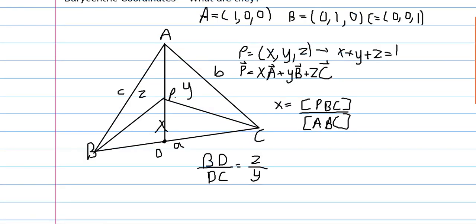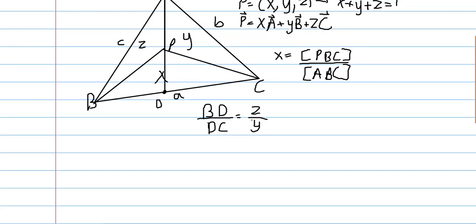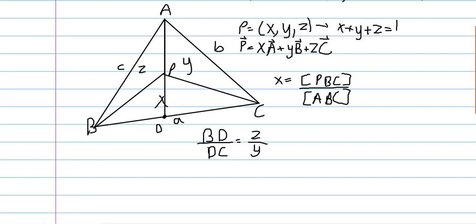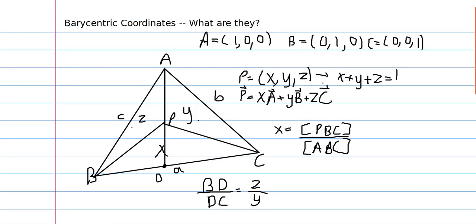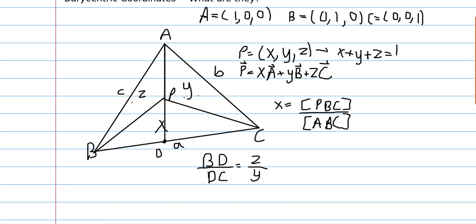Another way to define this point is as the intersection of lines from A, B, and C. Wherever they intersect — so let's say the ray AP hits BC at D — then we know that BD over DC equals z over y. If we extend BP to hit AC, then the ratio would be x to z. If all three of those ratios are simultaneously true, then P has the coordinates x, y, z. There are many ways to define the coordinates of P, which we'll use at our disposal.